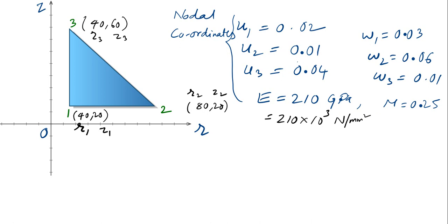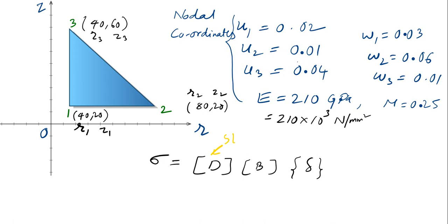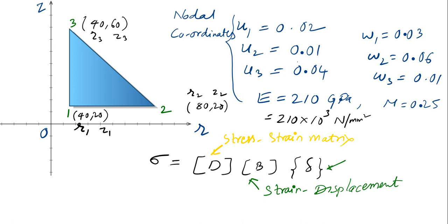For the axisymmetric triangular element, the element stresses can be calculated using the formula: sigma = D matrix × B matrix × nodal displacement vector (delta). Here D represents the stress-strain matrix, B represents the strain-displacement matrix, and delta is the nodal displacement.